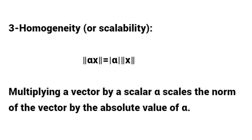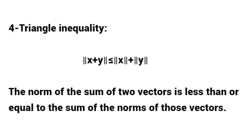Three: homogeneity or scalability. The norm of alpha times x equals the absolute value of alpha times the norm of x. Multiplying a vector by a scalar alpha scales the norm of the vector by the absolute value of alpha. Four: triangle inequality. The norm of x plus y is less than or equal to the norm of x plus the norm of y — the norm of the sum of two vectors is at most the sum of their individual norms.